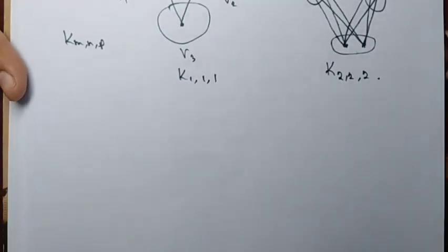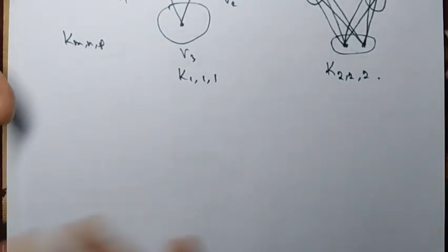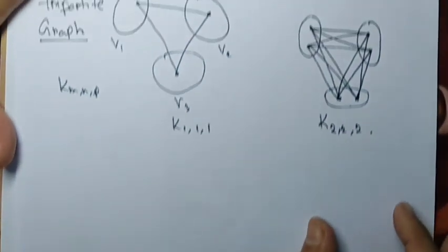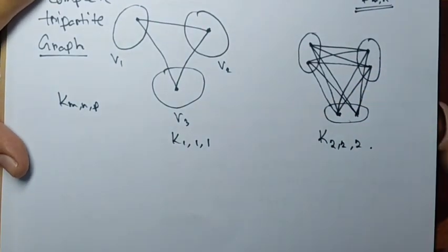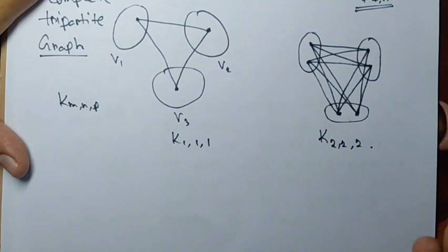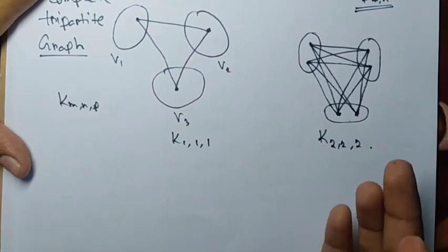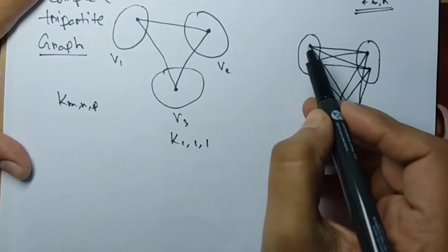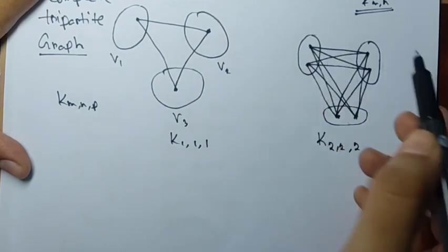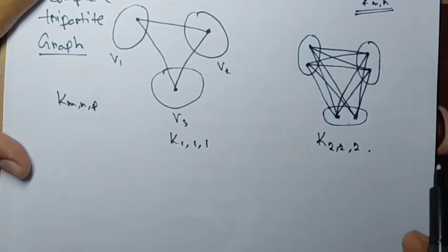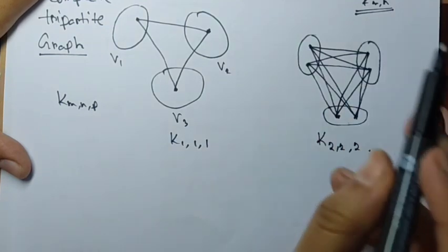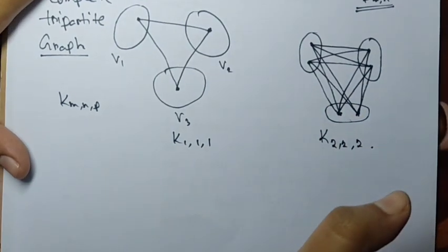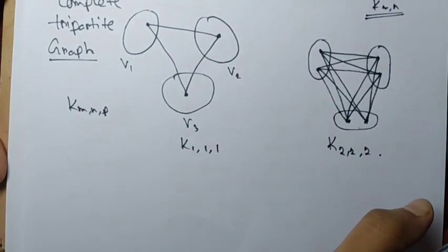Similarly, we can consider complete multipartite graphs. The concept extends naturally: take more than three parts, no two vertices from the same part are adjacent, and each vertex from each part is adjacent to every vertex in every other part. I am not discussing this in further detail as it follows the same principle.